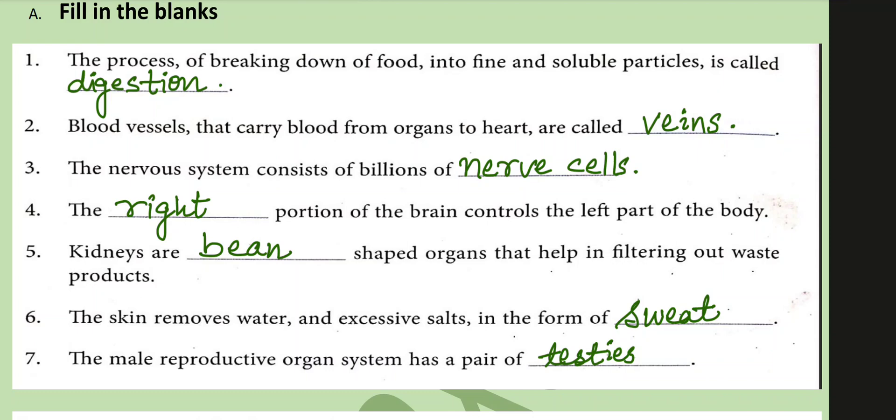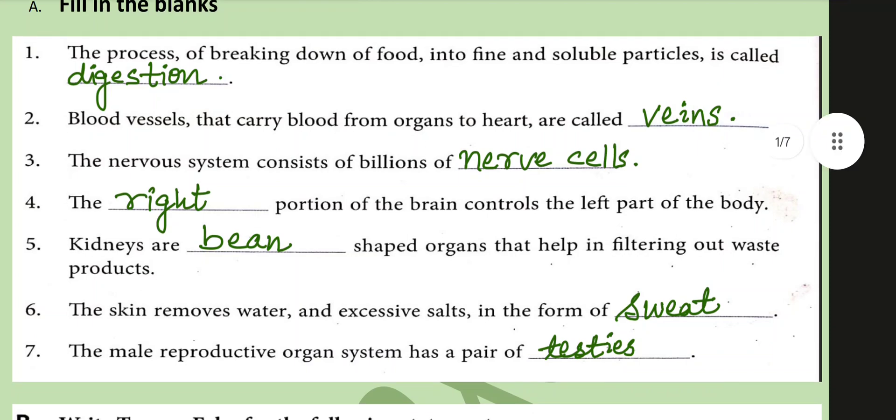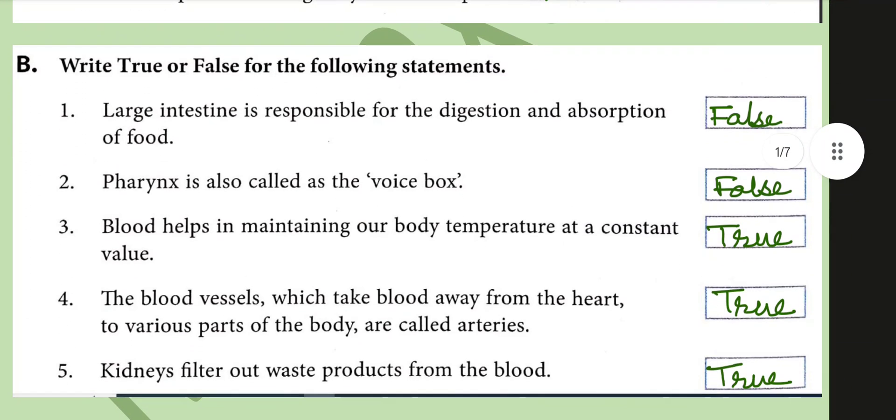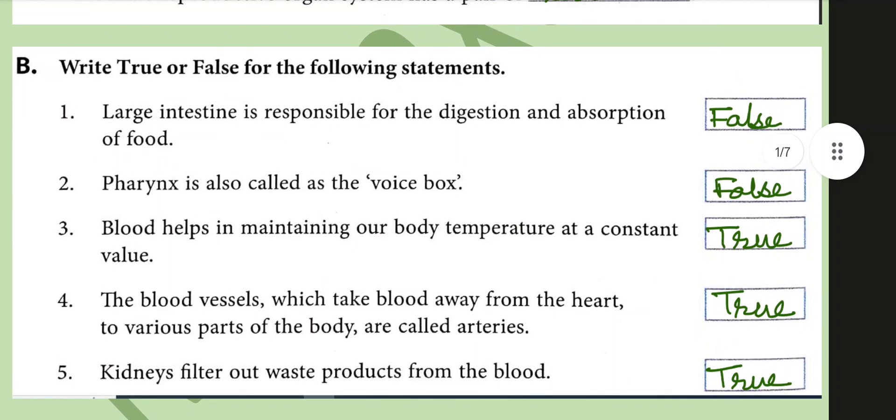The nervous system consists of billions of nerve cells. The right portion of the brain controls the left part of the body. Kidneys are bean-shaped organs that help in filtering out waste products. The skin removes water and excessive salts in the form of sweat. The male reproductive organ system has a pair of testes.